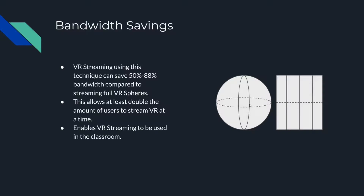Unfortunately if the user is looking at the intersection of four tiles, we have to stream all four. But that's still a 50% bandwidth savings — literally half the bandwidth compared to streaming the whole sphere. What this really enables is multiple people to watch VR videos on a wireless access point at the same time. Before, maybe we could get five to ten users watching VR at the same time. Now we can get 10 to 20 users instead, which is becoming a classroom size.